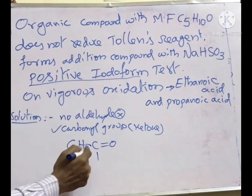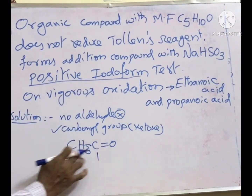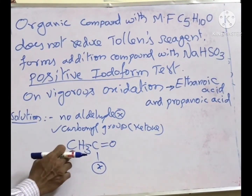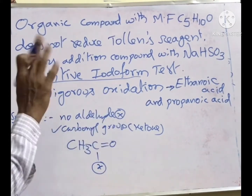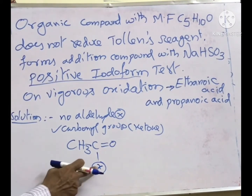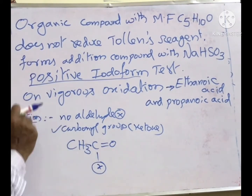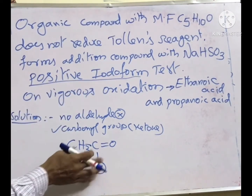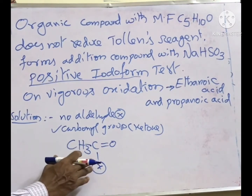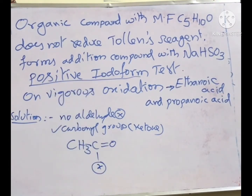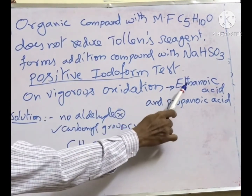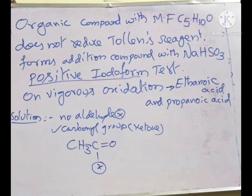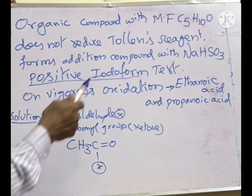If I have a CH3CO group, whether it is aldehyde or ketone — if it has this methyl group attached to the carbonyl (CH3CO), then it gives a positive iodoform test. So it can be a ketone containing CH3. Up to here we can conclude. Now on vigorous oxidation, all carbonyl compounds upon oxidation give carboxylic acids. Ketones give two different carboxylic acids. It is given ethanoic acid and propanoic acid — two different acids — that also confirms it is a ketone.